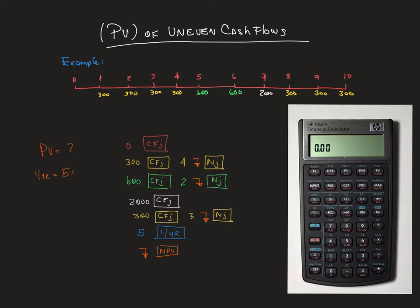Uneven cash flow is a series of cash flows where the amount can vary from one period to the next one. Any series of cash flow that doesn't conform to the definition of annuity is considered uneven cash flow.